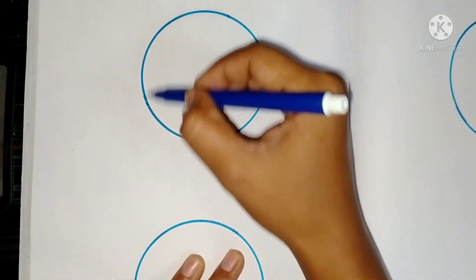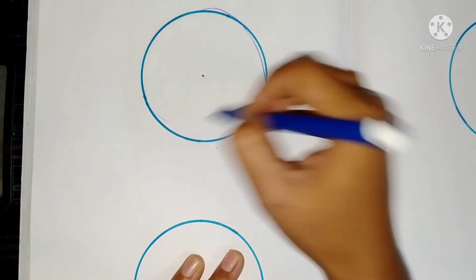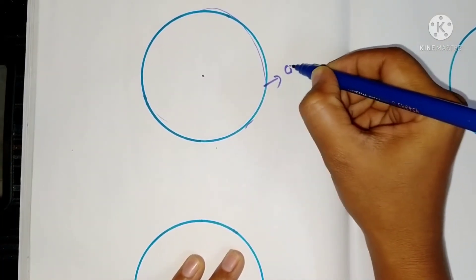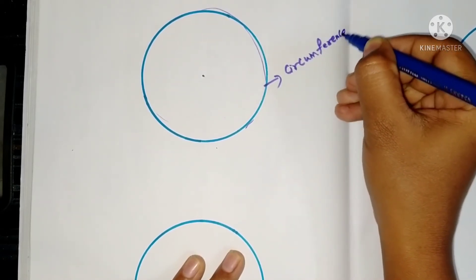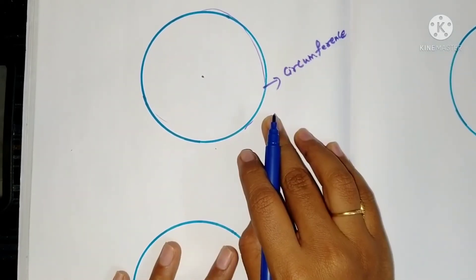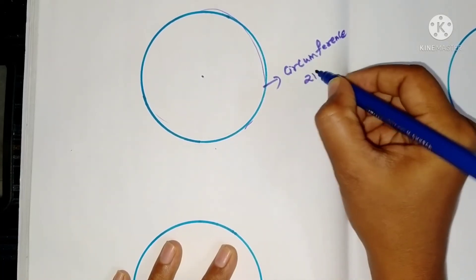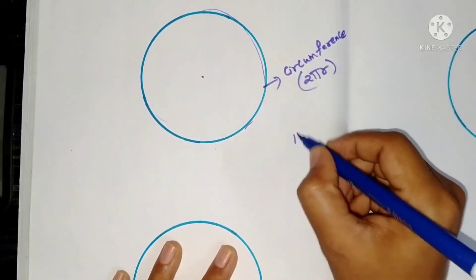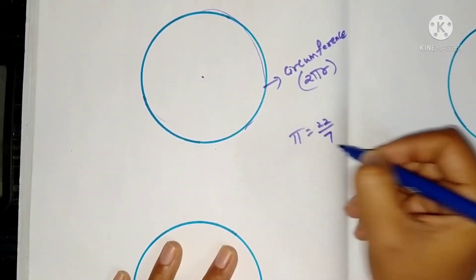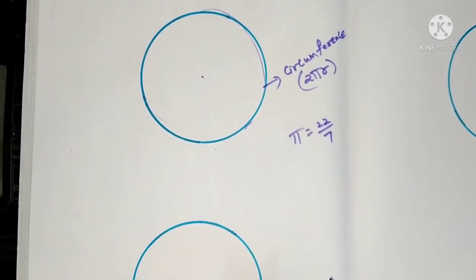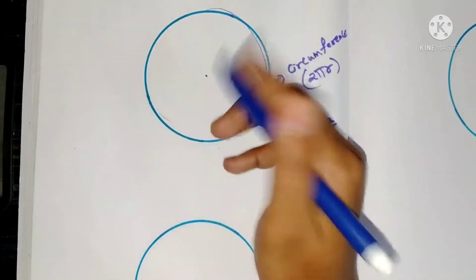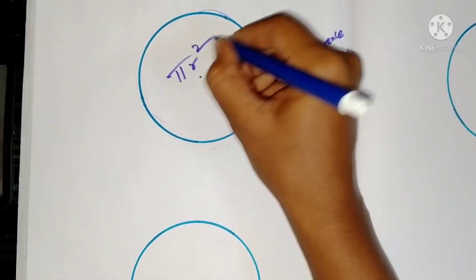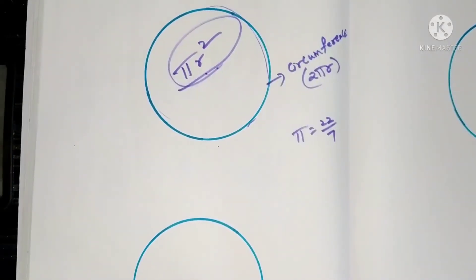The length around the circle is called the circumference. Circumference = 2πr, where π = 22/7. The area inside the circle is πr². The formula for area of a circle is πr².